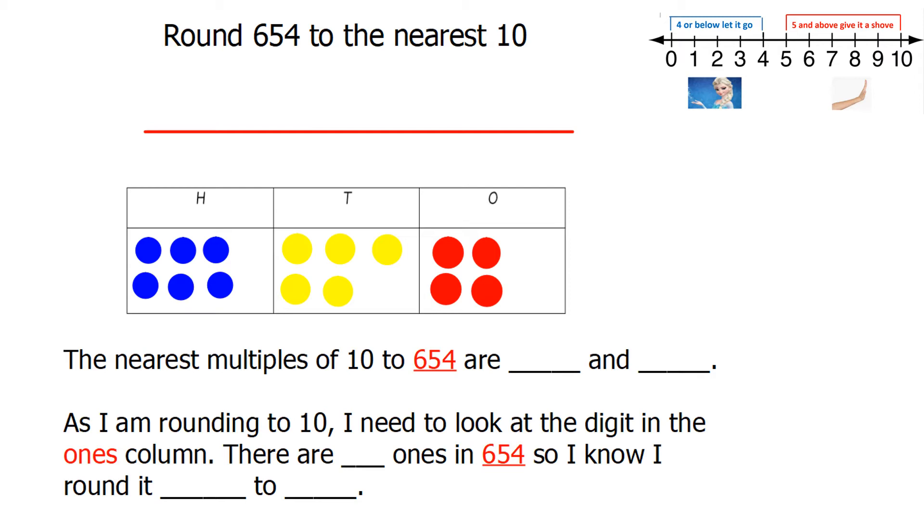I've already drawn my counters in my place value chart to help me. The nearest multiples of 10 to 654 are... I can see that 654 has 5 tens, so the multiple before must be 650 because of those 5 tens. And the multiple after must be 660 because that's 10 more. And I'm just writing each of those multiples on each side of my number line. And I'm going to put my number where I think it roughly goes on there.